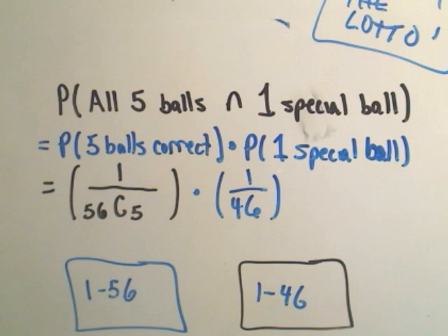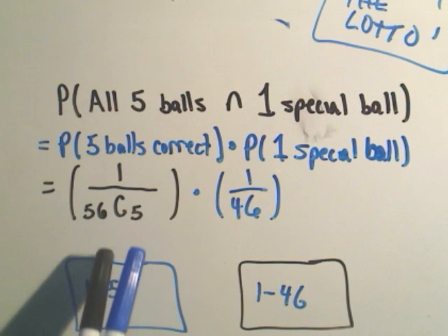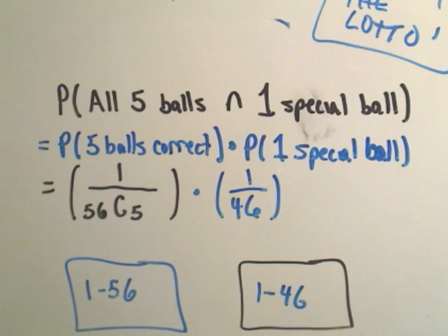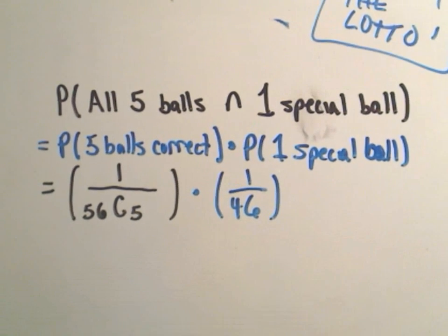All right, so this is now the probability of us getting the, of winning the Texas Lotto. Okay, so now we need to compute these things. 56 choose 5 and 1 over 46. And just as a reminder,